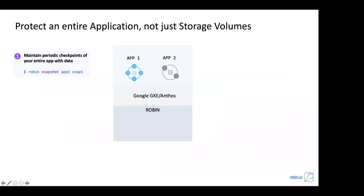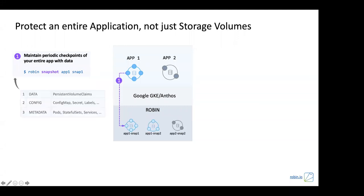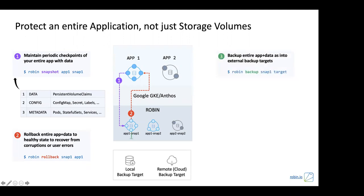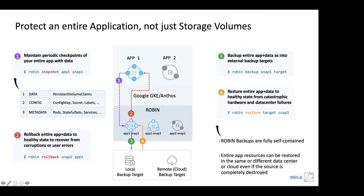The concept is to protect the entire application, not just the volumes. Robin provides primitives at the application level: you can take a snapshot of the entire application, protecting data, config, and metadata, and roll back to any snapshot at any point in time. You can push that snapshot — a consistent point-in-time image — to a remote target using the backup command, and restore from that backup at any point.